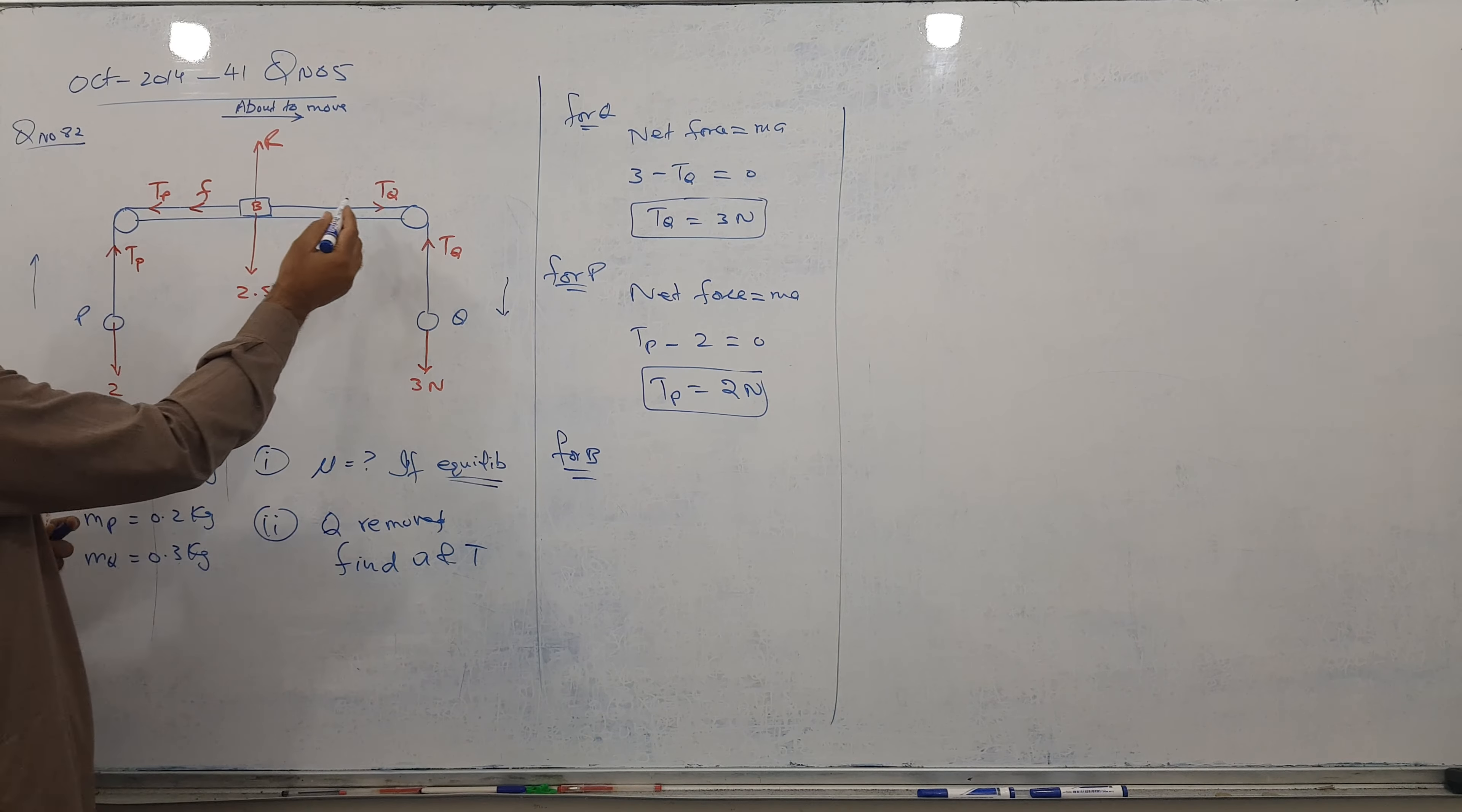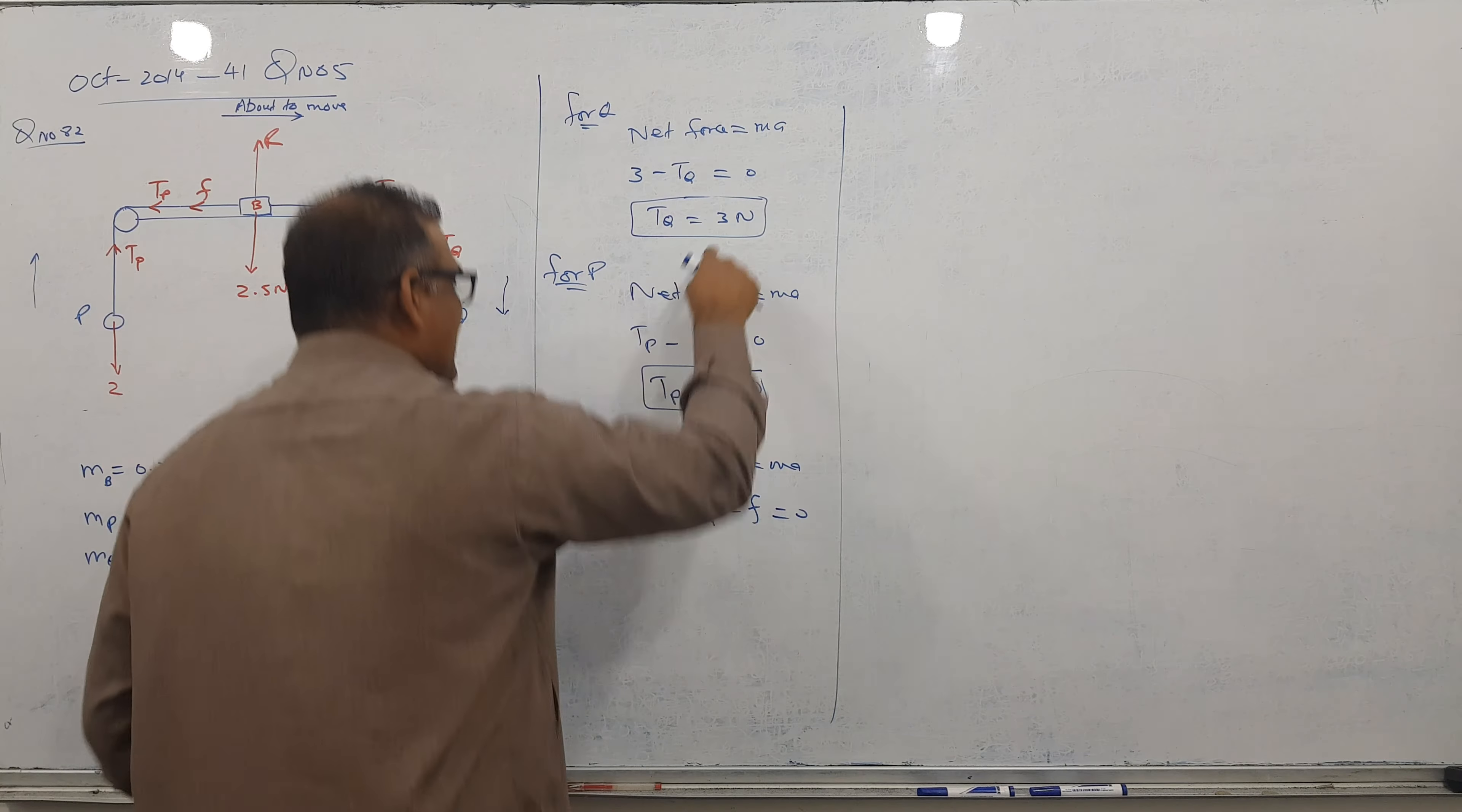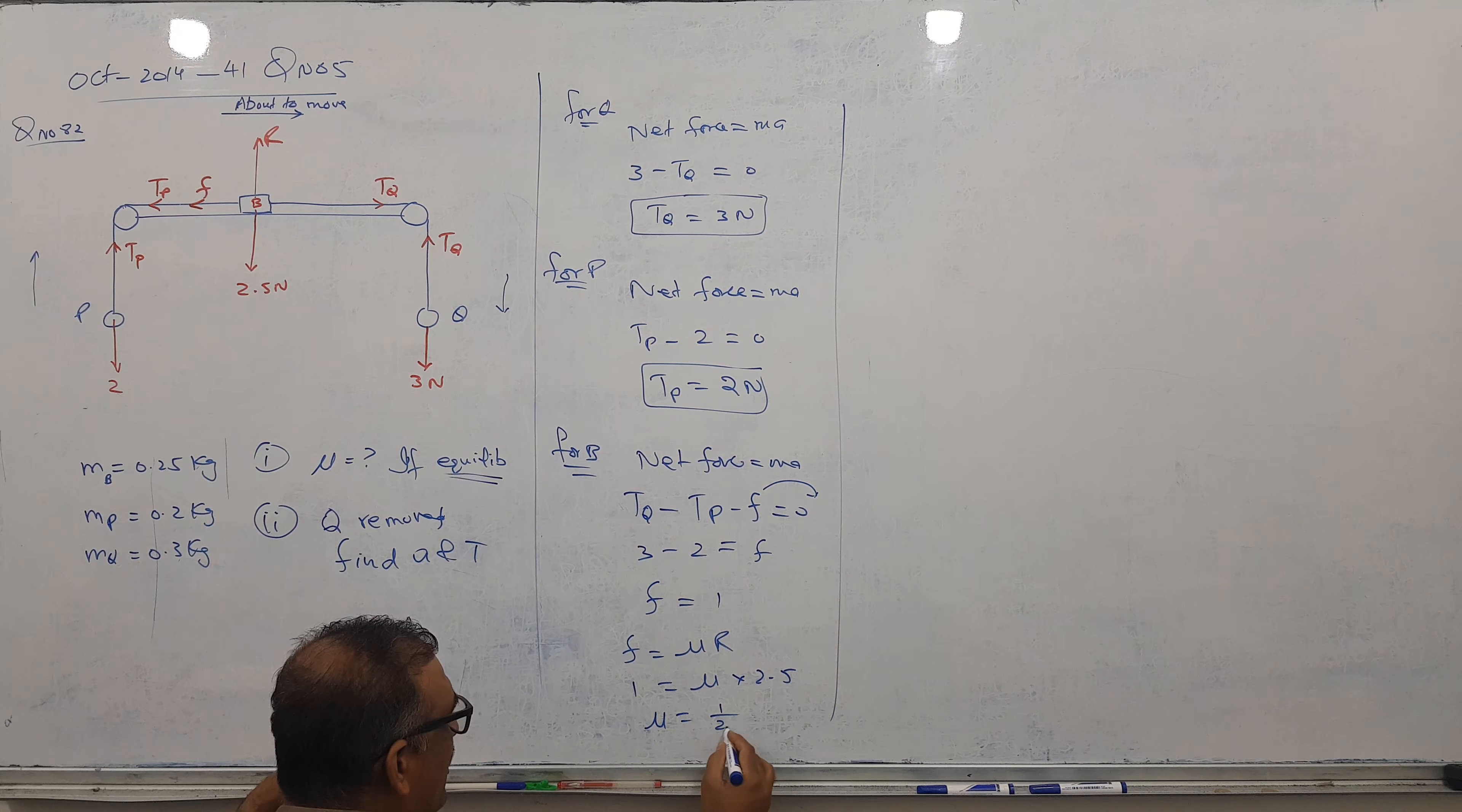So I can see here, net force equal to Ma. So tension Q, rightward forces minus backward forces equal to 0. Again, 0 because system in equilibrium. I'm going to put this 3 here, this 2 here, and friction will go on other side. So I got friction is equal to 1, and formula F is equal to Mu R. F is 1, Mu is my target, and R on the particle is 2.5. So Mu is equal to 1 over 2.5. And answer is coming, I think 0.4.